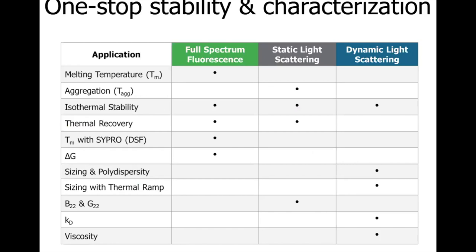For example, fluorescence — both intrinsic and extrinsic — is used to obtain the unfolding temperature of the protein, TM, which is amongst one of the first go-to parameters for stability screening. Intrinsic fluorescence is also used to obtain protein thermodynamic stability information in the delta G application, or to understand the impact of temperature shifts on stability in the thermal recovery application. Light scattering measurements are used to help understand protein aggregation behavior or self-association propensity in the B22, Kd, and G22 applications.